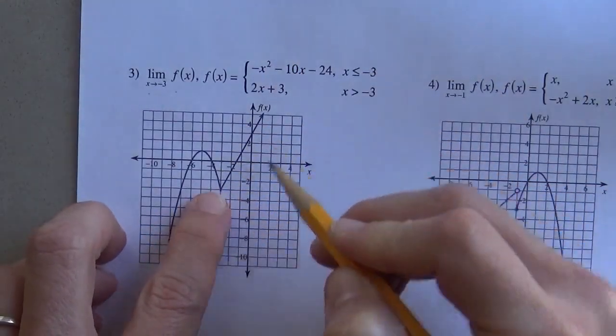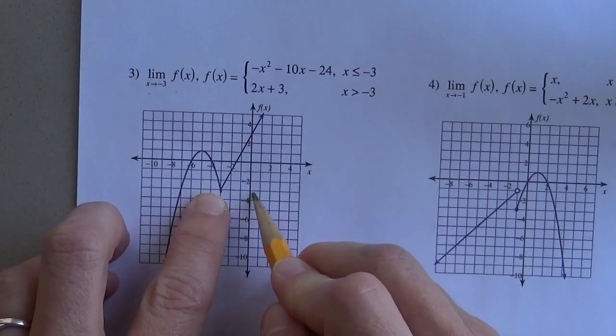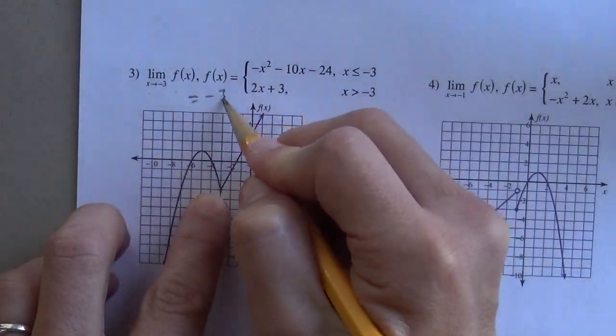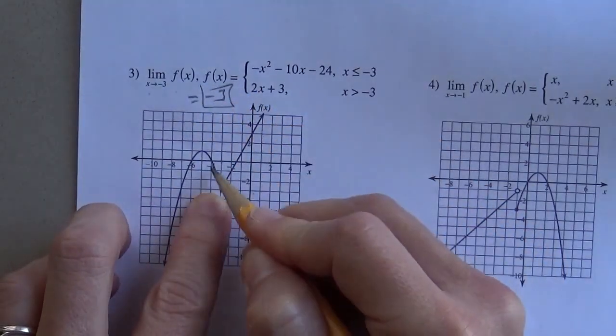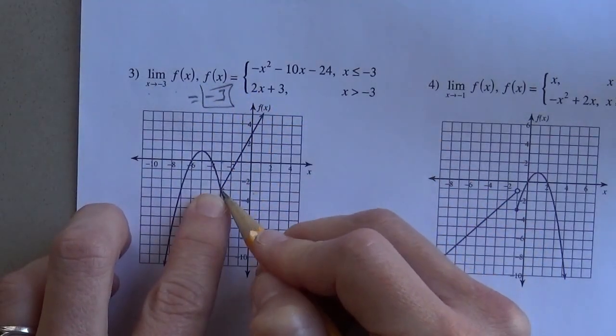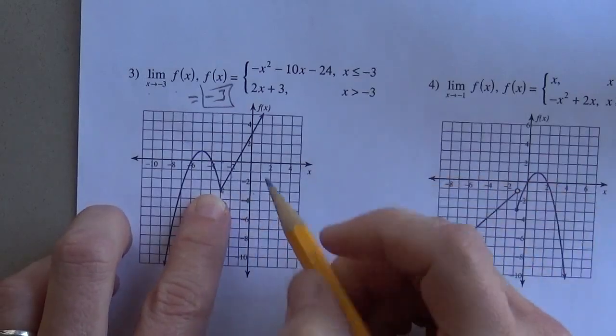Well, it looks like it's going to negative 3 on the y value there. And it doesn't matter whether I was approaching this from the right or from the left. There's no ambiguity. It's just negative 3.